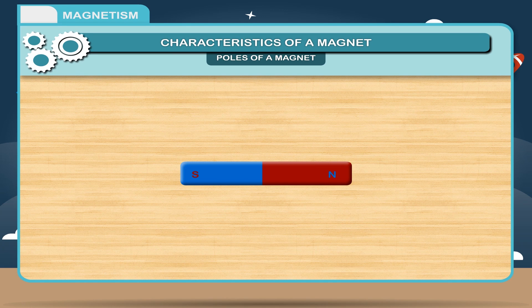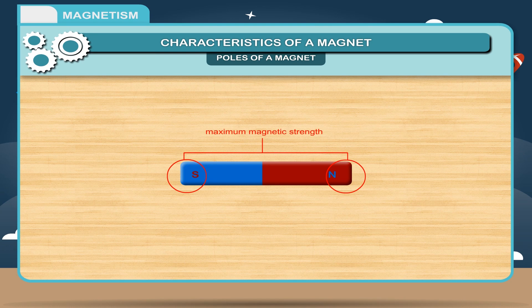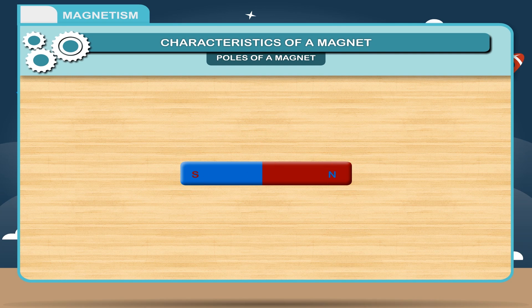Every magnet, irrespective of its shape, has a north pole and a south pole. The strength of a magnet is maximum at poles. As you move towards the center of the magnet, the magnetic power goes on decreasing and becomes negligible at the center.